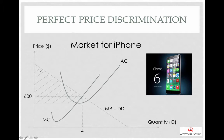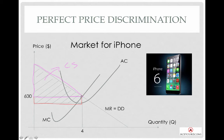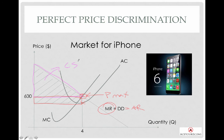Looking at the diagram, the shaded triangle represents the consumer surplus. The rectangle here is your profit level — this is your marginal revenue, this is your marginal cost, and this is your profit-maximizing point. At the profit-maximizing point, you find the gap between your average cost and average revenue, which gives your profit level. This amount of consumer surplus is captured by producers under perfect price discrimination.